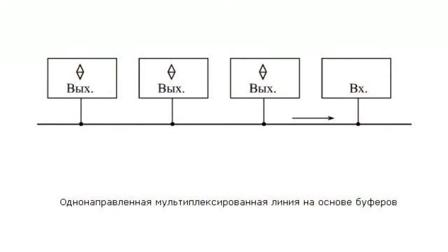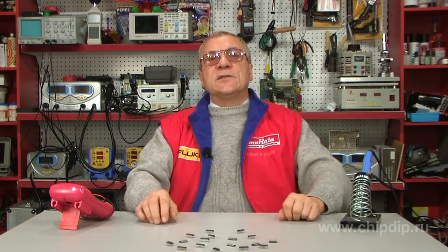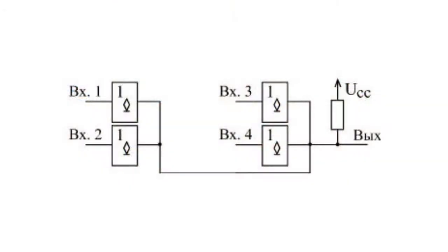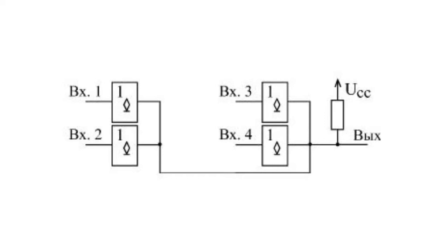An LP17 microchip is an example of an OC output buffer. Outputs of several OC buffers can be combined to obtain the wired AND function — that is, logic 1 as output will only be obtained when logic 1 is present on all inputs. Thus, a multi-input AND element is fully implemented.